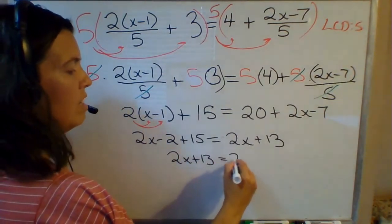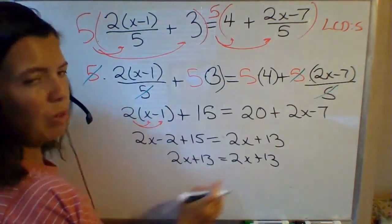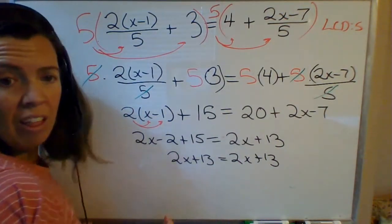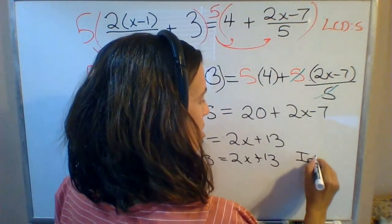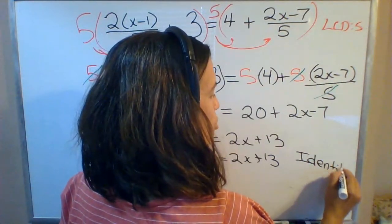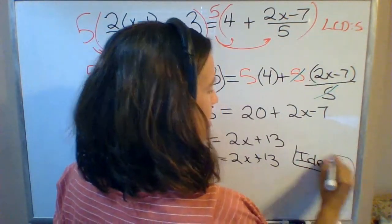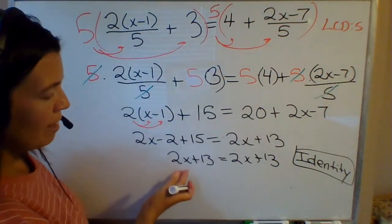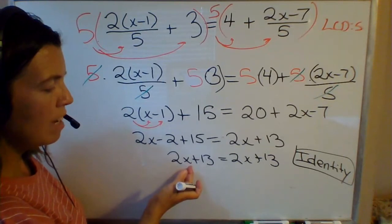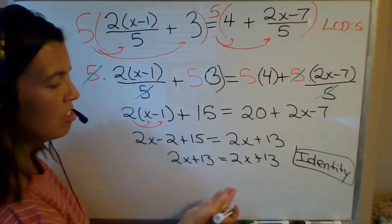Now when you see this happen - both sides of the equation are exactly the same - this is when you know that you're dealing with an identity, which is an equation that's true for all values of x. I don't need to pick a special value of x in order for 2 times x plus 13 to equal 2 times x plus 13.